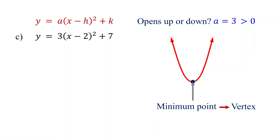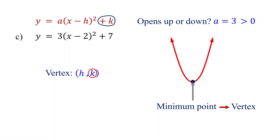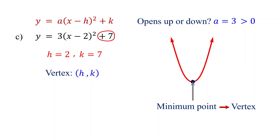For a quadratic function in vertex form, the vertex is the point (h, k). You just need to identify the values of h and k from the given function, but be careful about the signs. Notice that we have a negative h inside the parentheses, but the h in the vertex is positive. So for h, we take the opposite of the number inside the parentheses. For k, both in the function and in the vertex, the signs are the same, so we take it as it is. In our function, the number inside the parentheses is negative 2, and h is the opposite of it, so it is positive 2. k is the constant term as it is, so it is equal to 7. So the vertex is the point (2, 7). The minimum value of the quadratic function is the y-coordinate of the vertex, which is 7. This occurs when x equals 2.